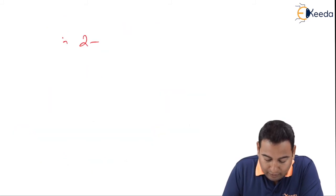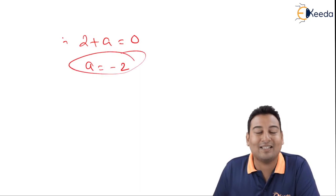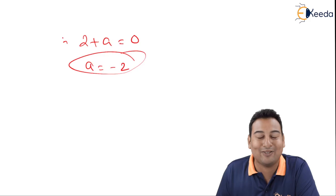Therefore, 2 plus a equal to 0, a equal to minus 2. That's it. The vector was solenoidal. It is asked to find the value of a. We got it. Hope you understood. Thank you.